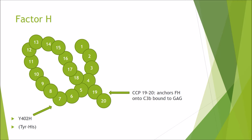Factor H has 20 domains called CCP (complement control protein) domains, each with roughly 60 amino acids. The Y402H polymorphism is located in the seventh CCP domain and represents a change from tyrosine at residue 402 to histidine. This region is essential for binding to glycosaminoglycans on cells, with a similar function also found in domains 19 and 20.